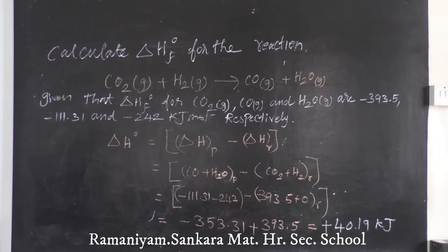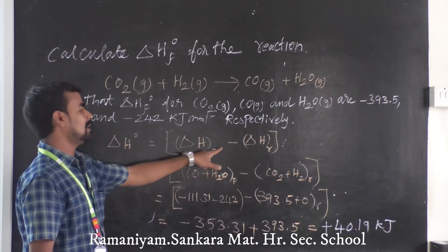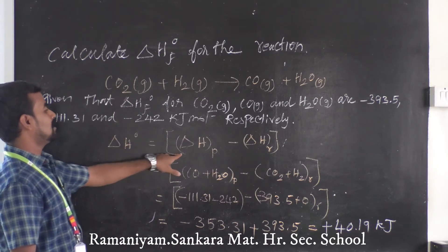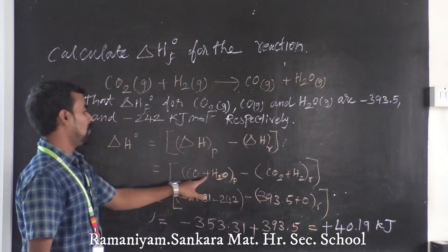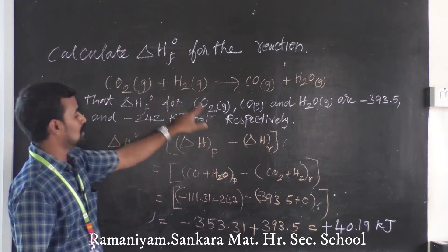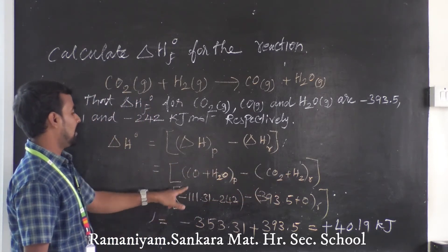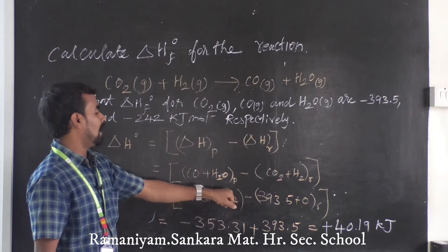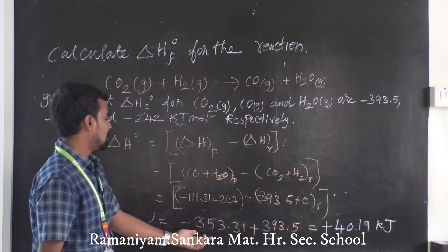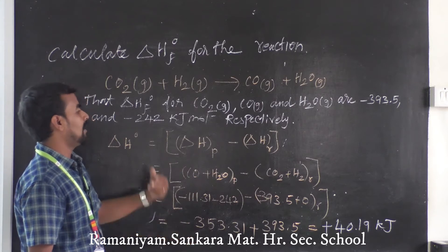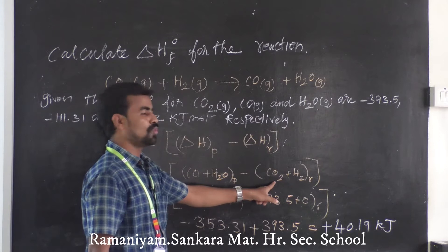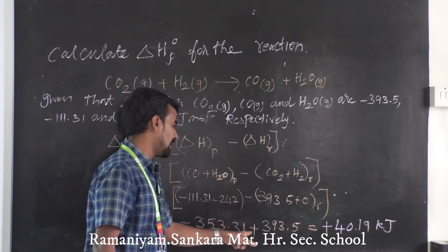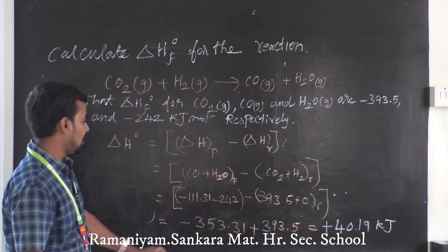Using the formula delta H = delta H°f (products) minus delta H°f (reactants): product side = CO + H₂O = (−111.31) + (−242) = −353.31 kJ. Reactant side = CO₂ + H₂ = (−393.5) + 0 = −393.5 kJ. So delta H = −353.31 − (−393.5) = −353.31 + 393.5.